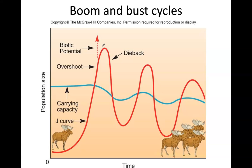What I want you to notice on this graph is what happens to the carrying capacity over time. Because the moose were really the only herbivores on the island, scientists could track it. What you should see is that the carrying capacity actually decreases over time. If you draw a line across the graph, the carrying capacity declines with each boom and bust cycle, because every time they boom, they damage the flora on the island and eat too many plants for them to recover.